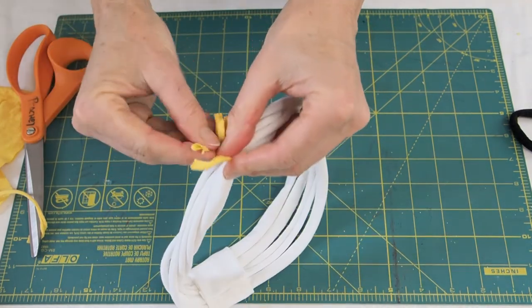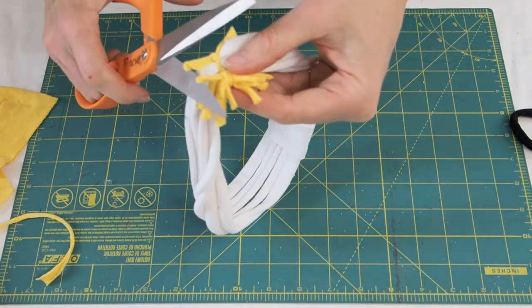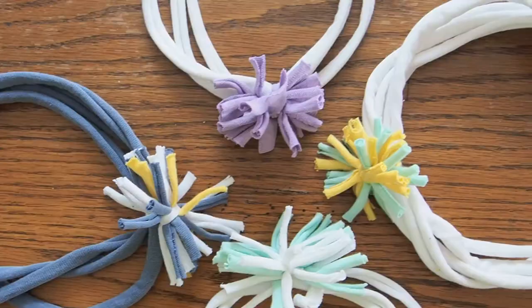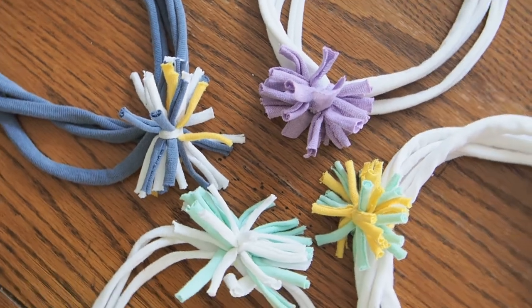Tie that on real tight. I usually do a double or even a triple tie. Cut those excess pieces. And then you have your little pom pom on your cute little headband. Now you can go out and make some of these fun hair bands for all those special little ladies in your life.